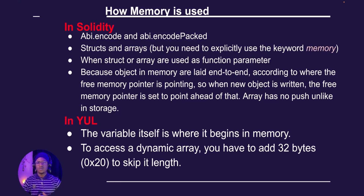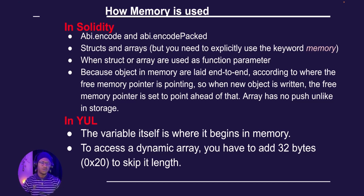Our first takeaway: in Solidity, memory is used anytime we declare ABI encode or ABI encode packed, and whenever we declare structs and arrays — but you must explicitly use the keyword memory when declaring structs and arrays. Memory is also used when setting function parameters with the memory keyword, or when returning a function parameter with memory. Objects in memory are laid end-to-end according to where the free memory pointer is pointing; when a new object is written, the pointer advances. Nodes and arrays in memory don't have push because you would likely cluster with other slots.